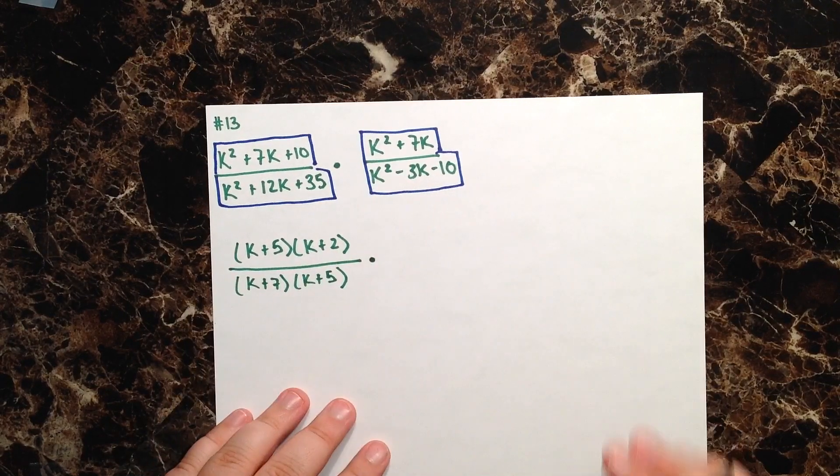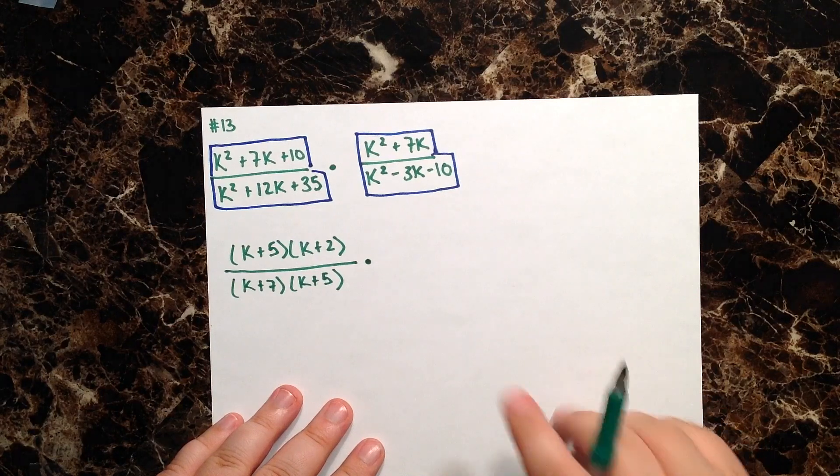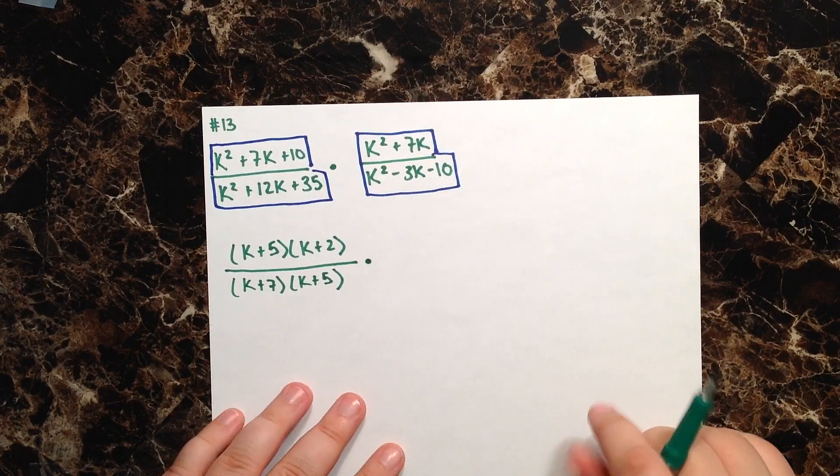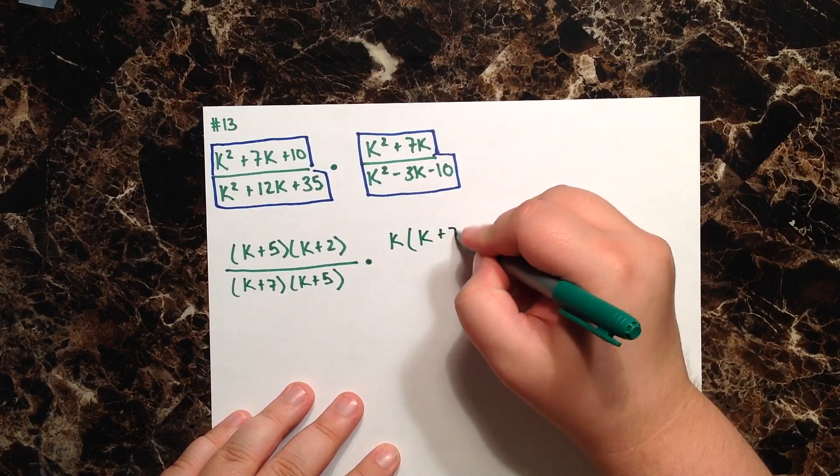Now let's look at my binomial here in the second numerator. The only thing they have in common is a k, so let's go ahead and pull out a k. When we do that, we're left with k plus 7.